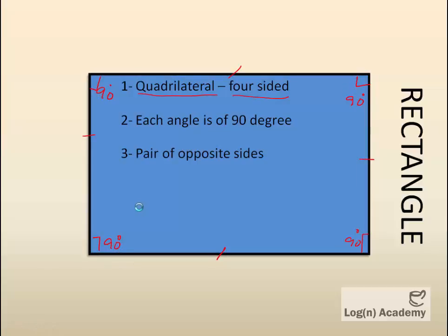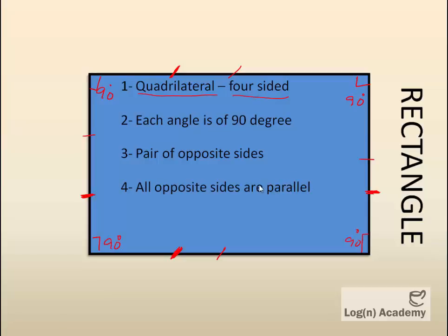The third property is that we have two pairs of opposite sides. This side is opposite to this side, and this side is opposite to this side. Property number four is that its opposite sides are parallel to each other.